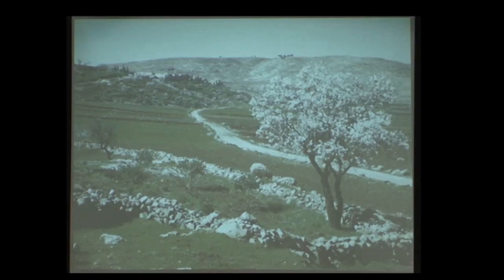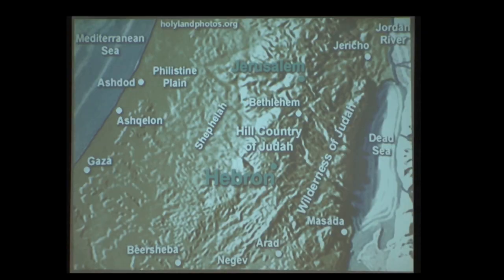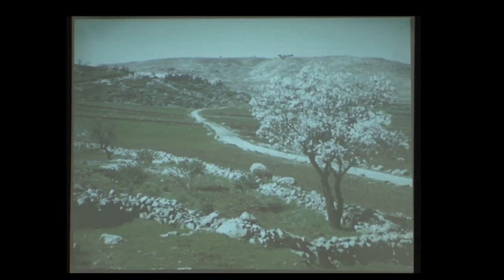To the west, as you can see on the map, you have the Shephelah — the hill country — and then beyond that, nice open plains which give you lots of access to the west. They say 'the west is the best,' and it really is in the land of Israel. That's where all the opportunities are: the trade, the commerce, the seaports, and all those goodies.